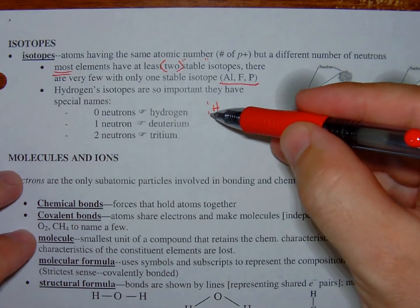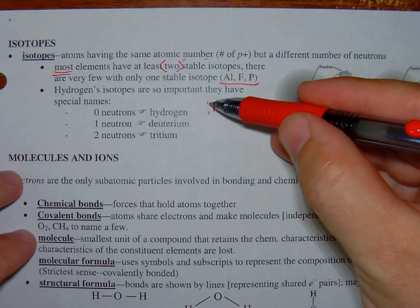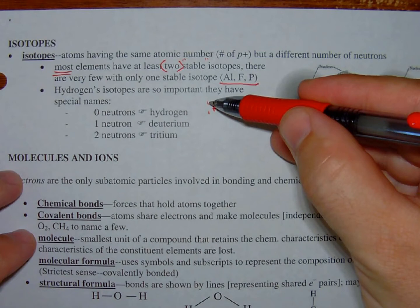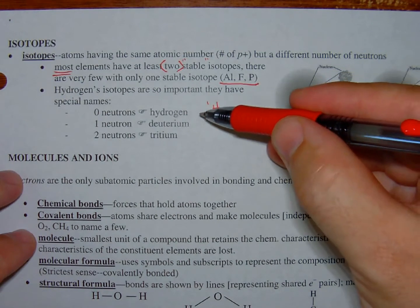See how the atomic number is the same as the mass number? That's because the number of protons, one, plus the number of neutrons, zero, is still one, right? We just call that hydrogen.